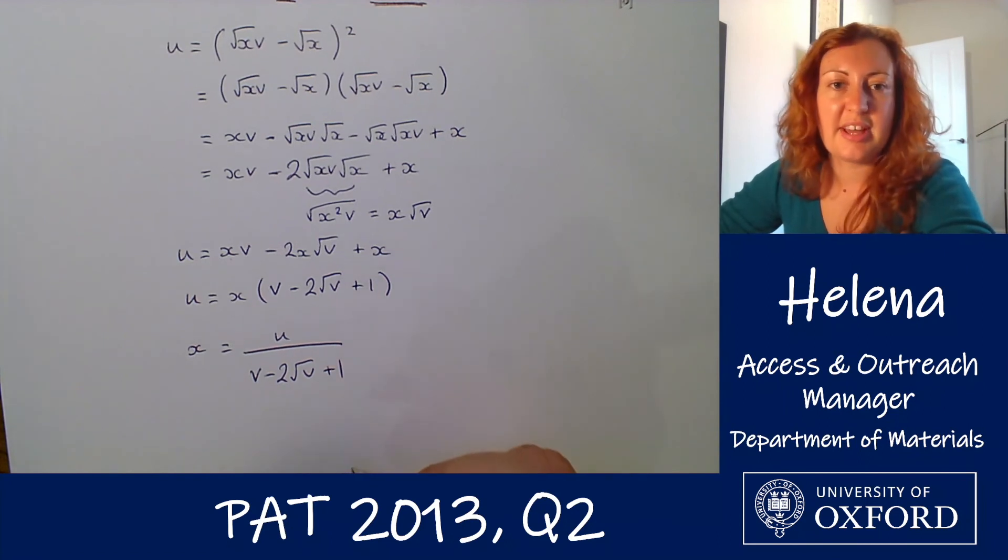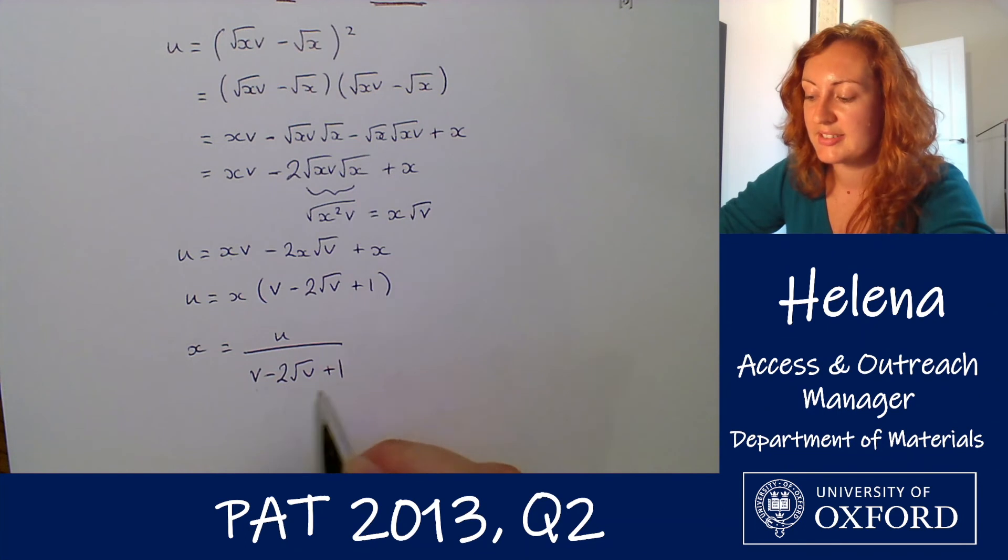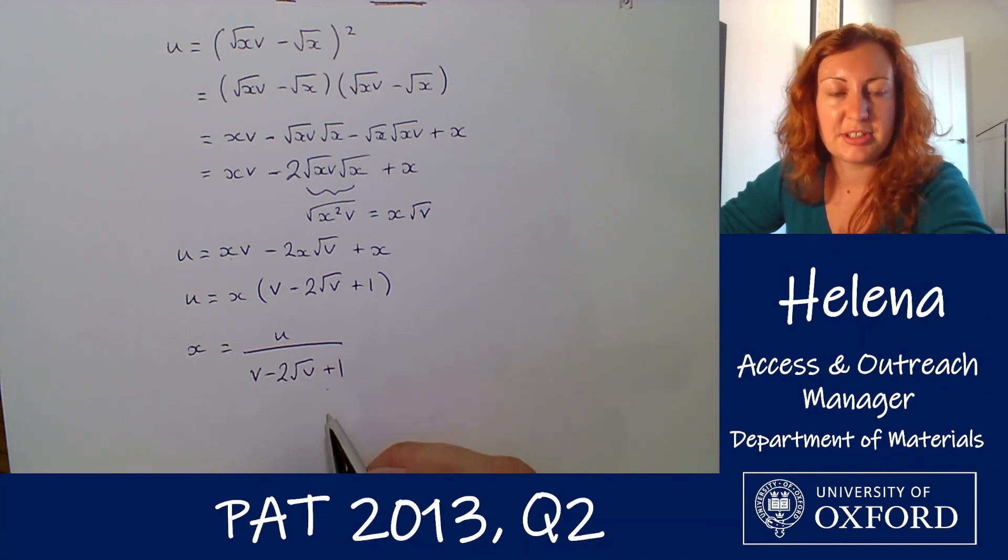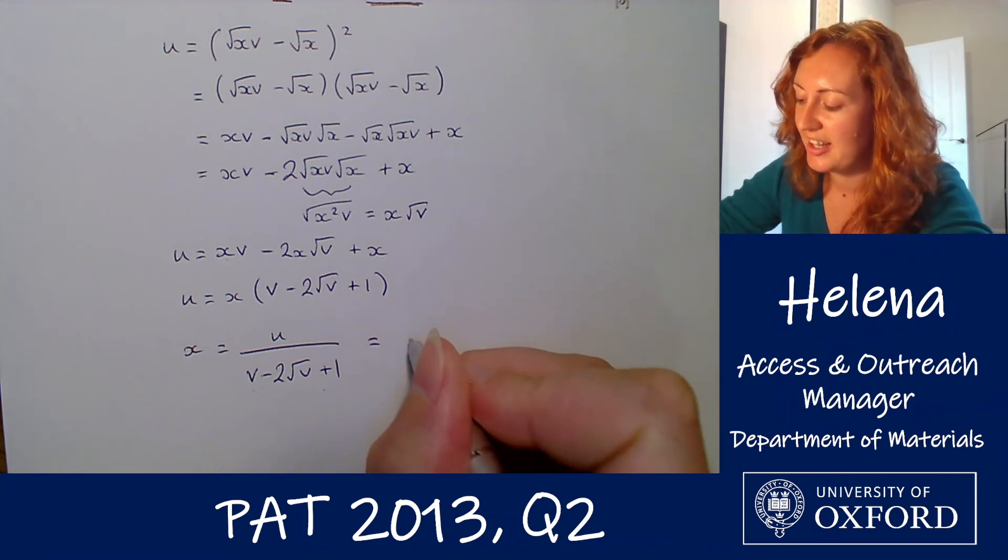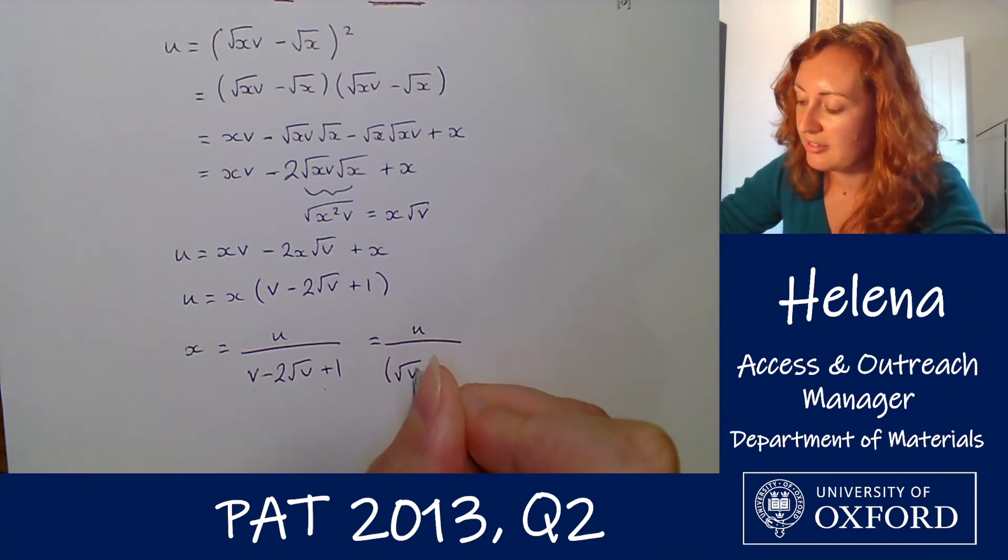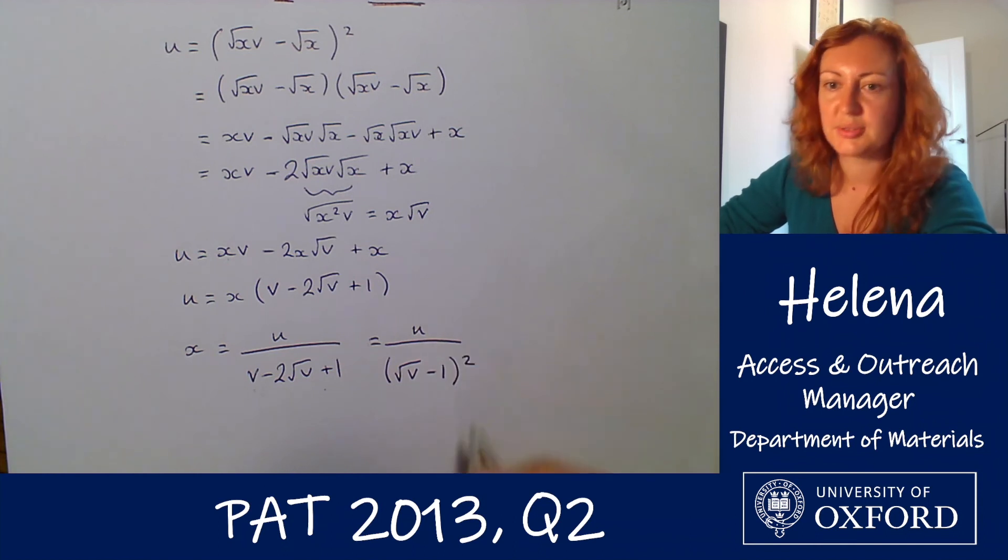And that's a nice expression for x. We could leave it like that. However, you might recognize this form for the expression on the bottom, and we can actually simplify this even further, which gives us x is u divided by root v minus one all squared.